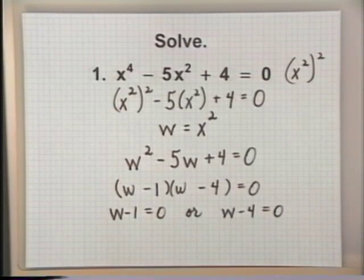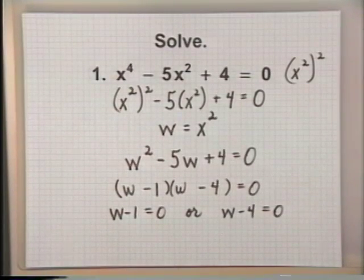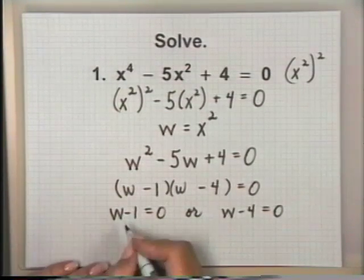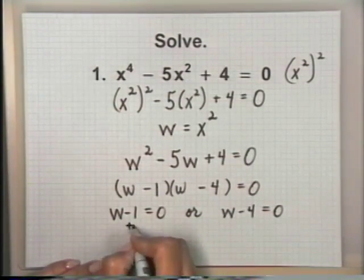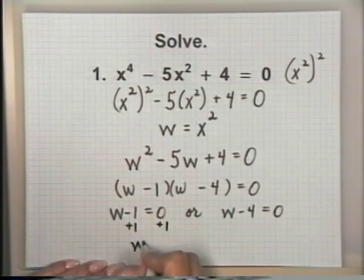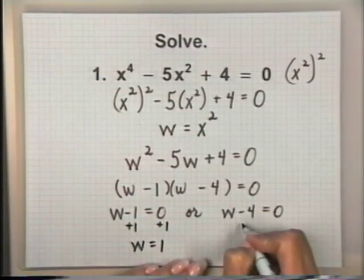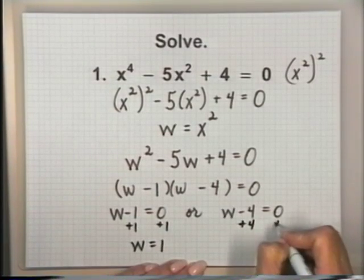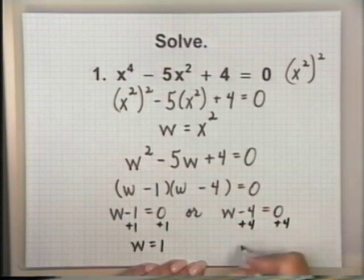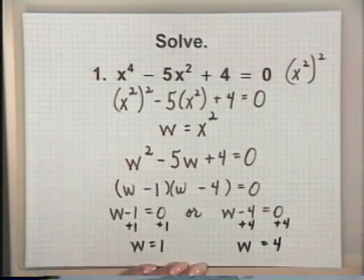Solving the equations: for the first, add one to both sides — we get w equals one. For the second, add four to both sides — we get w equals four.